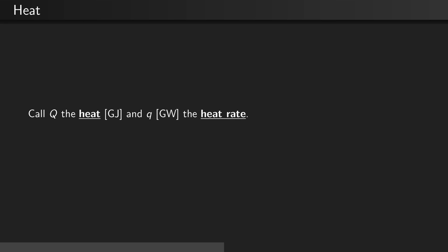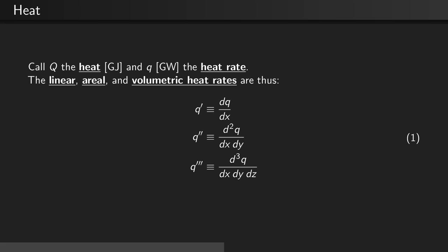Additionally, let's call big Q the heat in gigajoules and little q the heat rate in gigawatts. The linear, areal, and volumetric heat rates are thus: Q' is the linear heat rate, defined as the first derivative of the heat rate Q.